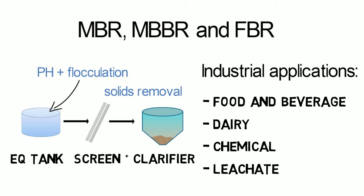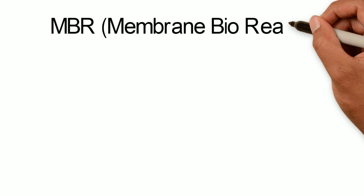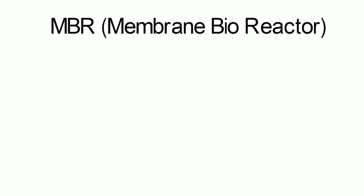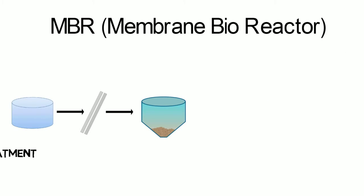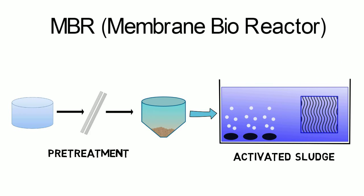MBR stands for membrane bioreactor and is a combination of a membrane process like ultrafiltration and the activated sludge process. The UF membrane is mostly submerged in the activated sludge basin or in a separate tank.